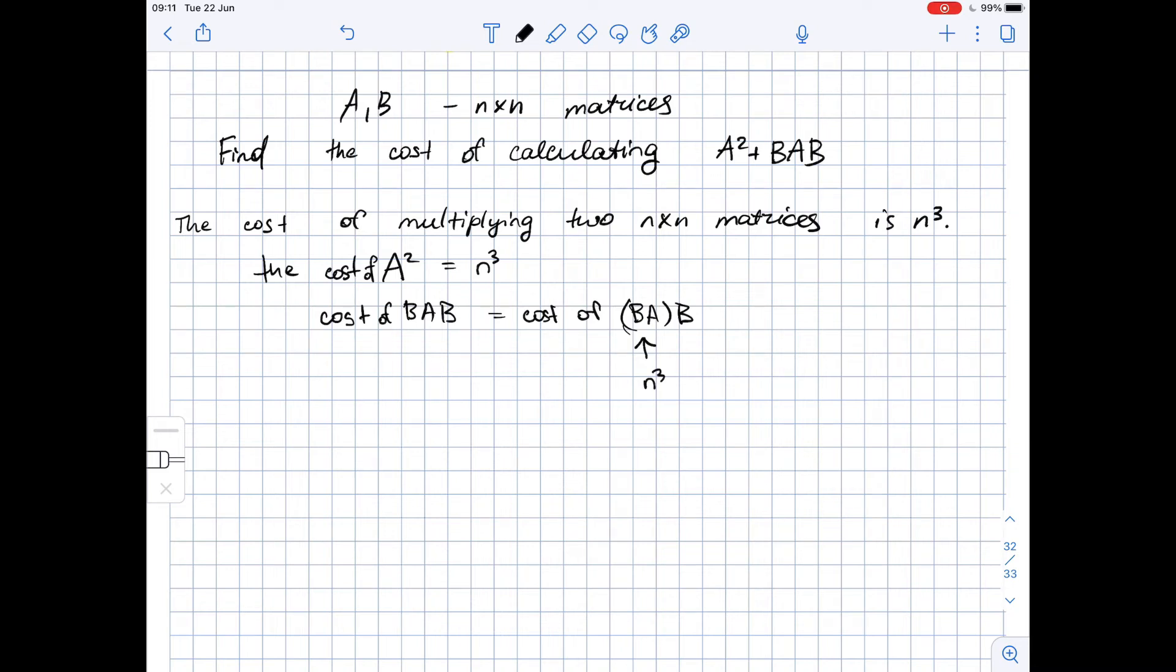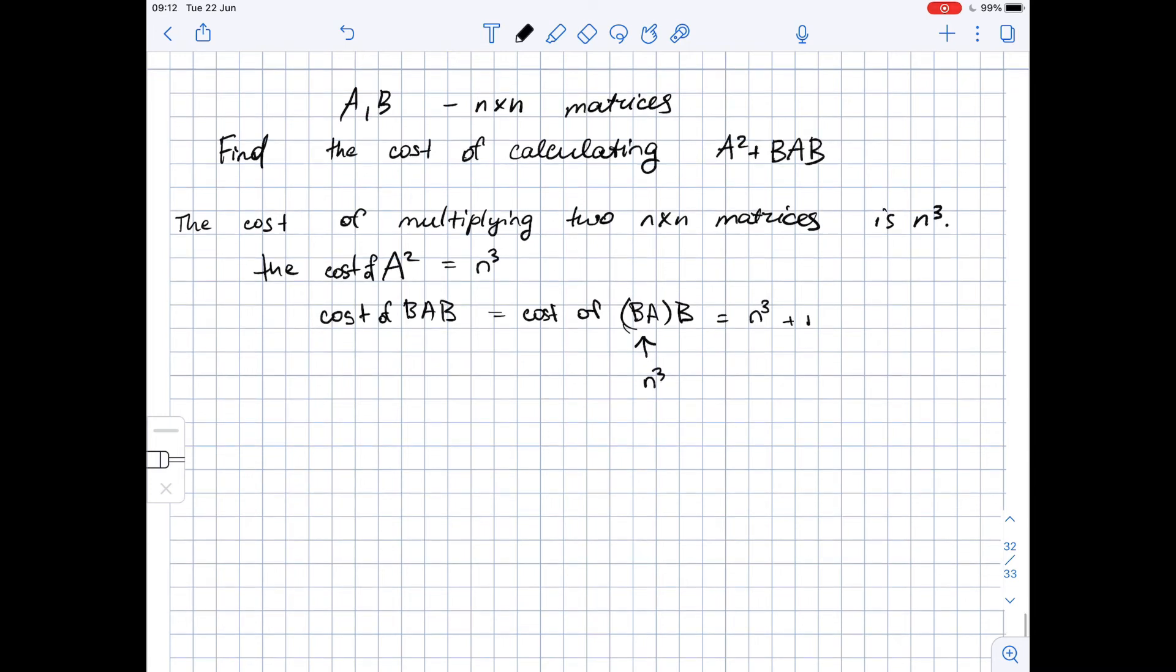But then, in the result, we will also get n by n matrix BA and the cost of finding BA times B will also be n cubed. This equals n cubed, the cost of finding BA, plus n cubed, the cost of finding BA times B. So this equals 2 n cubed.